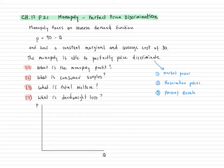Although many firms choose not to price discriminate because it would be too costly or too difficult. A firm that can perfectly price discriminate is able to charge each customer her reservation price — the maximum amount of money she would be willing to pay. That means we would charge everybody up to the point they're willing to pay, which means there would be a point on the demand curve. Because of that, a perfectly price discriminating monopoly can capture all the consumer surplus.